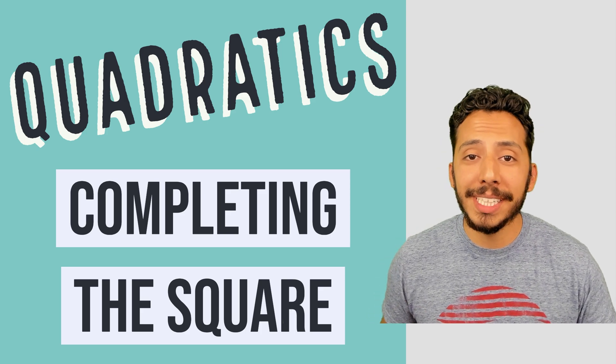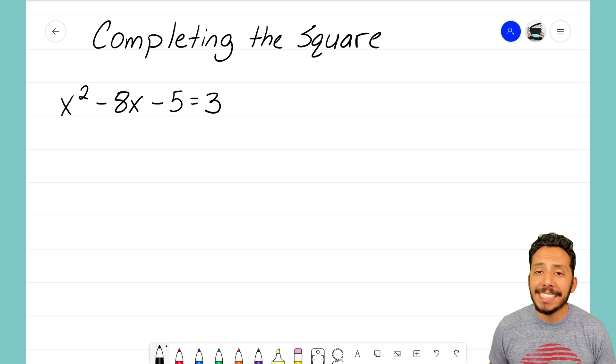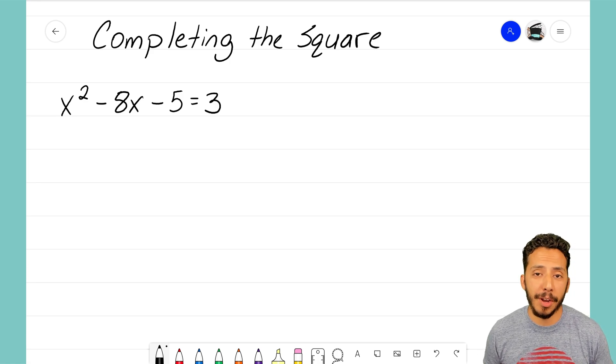So let's go ahead and jump right into an example problem where I'm given an equation x squared minus 8x minus 5 equals 3. And I want to use the completing the square method to help me determine what those x-intercepts are.